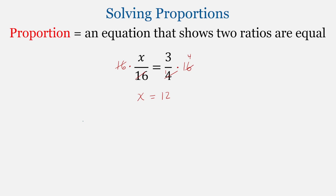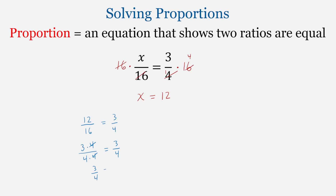Let's check our answer. Wherever there's an x, we're going to plug in the value of 12. So we have 12 over 16 equal to 3 over 4. Let's simplify the left side: we can rewrite 12 as 3 times 4 and 16 as 4 times 4. These 4s cancel, leaving the left side as 3 fourths equal to 3 fourths — and that's a true statement. Again, that's one way of solving proportion problems.